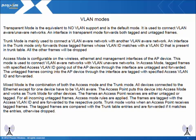All other frames will be dropped. Access mode is configurable under the Wireless, Ethernet, and Management interfaces of the AP device. This mode is used to connect VLAN-aware networks with VLAN-unaware networks. Frames going out of the AP through the interface are tagged with the specified VLAN ID and forwarded. Untagged frames coming into the AP through the interface are tagged with the specified access VLAN ID and forwarded.